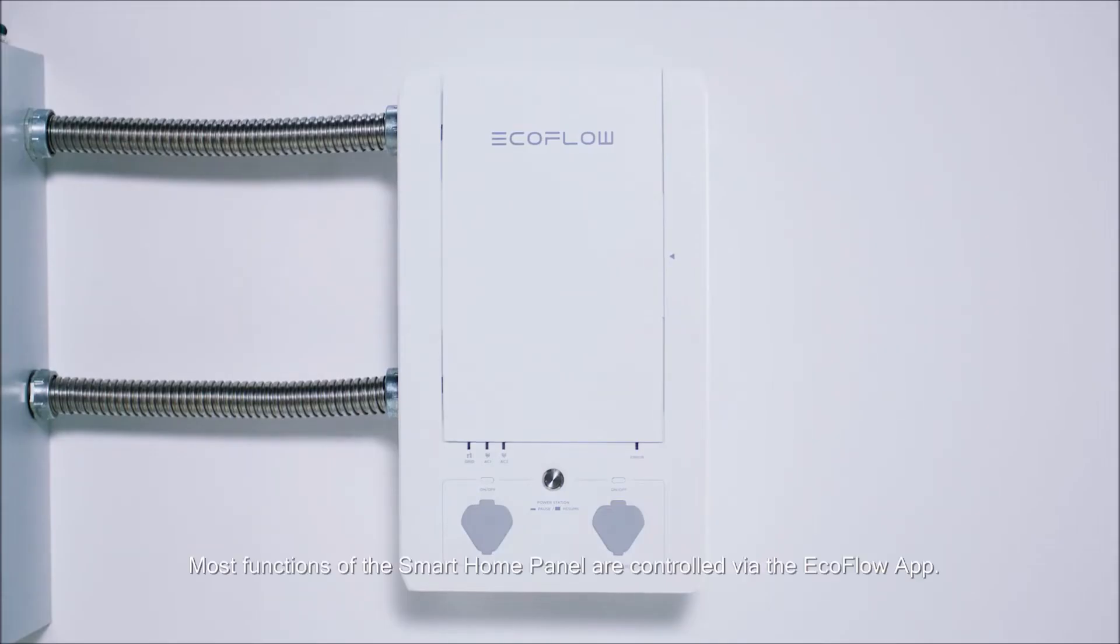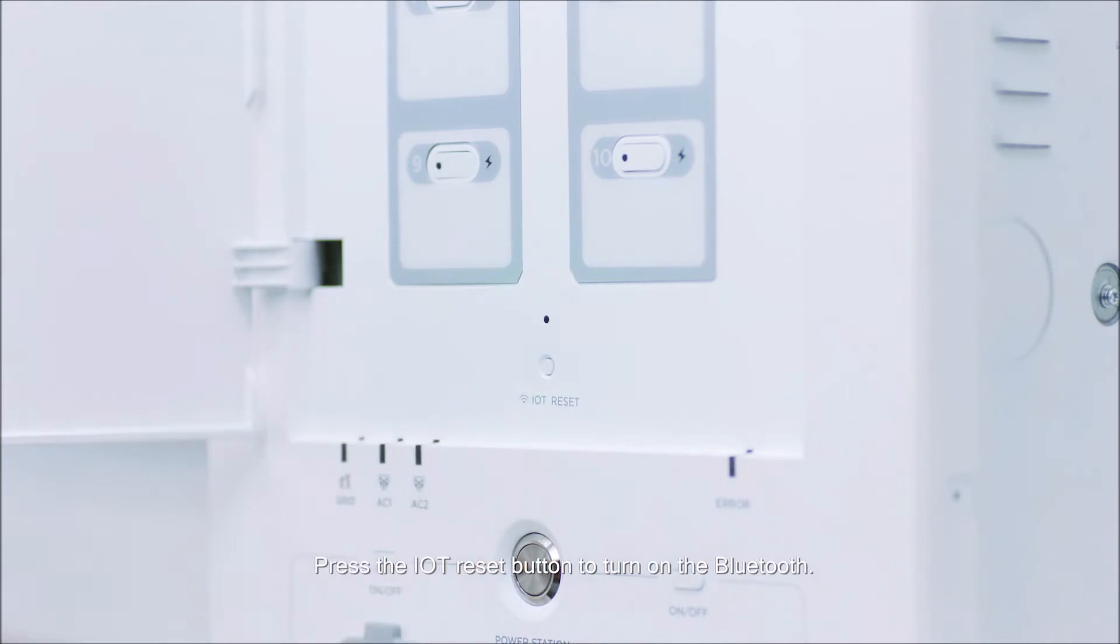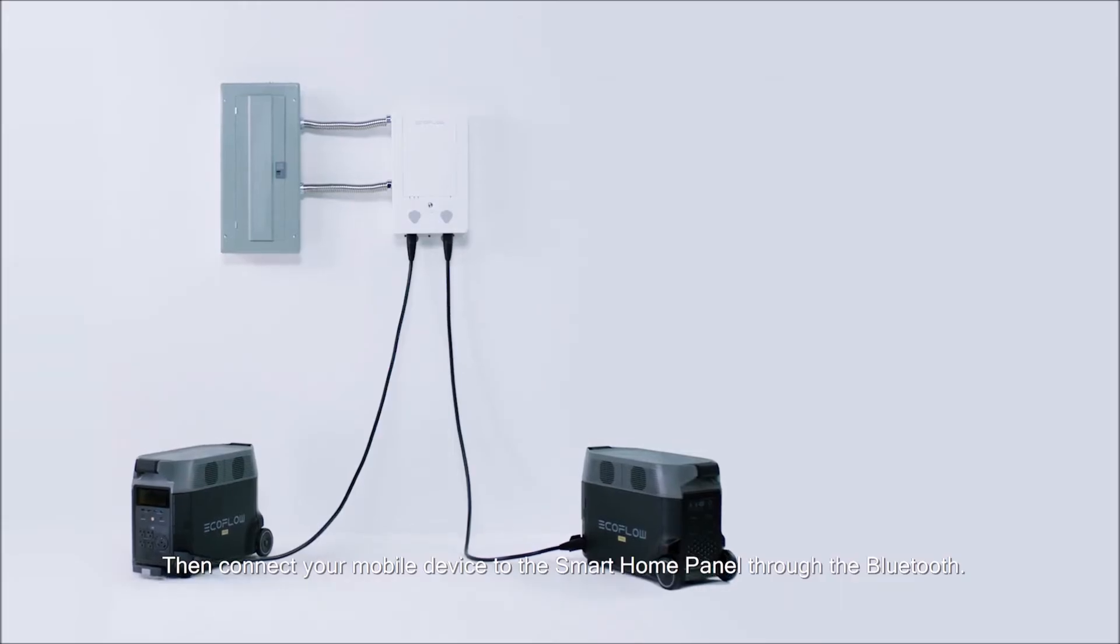Most functions of the smart home panel are controlled via the EcoFlow app. Press the IoT reset button to turn on the Bluetooth, then connect your mobile device to the smart home panel through the Bluetooth.